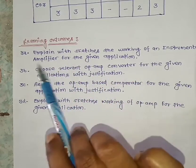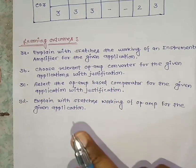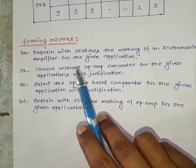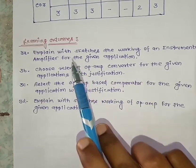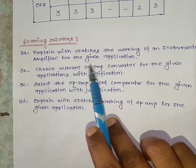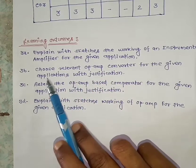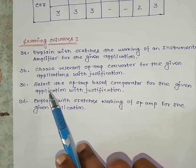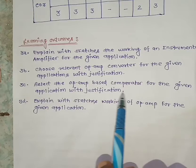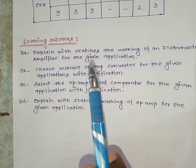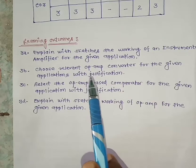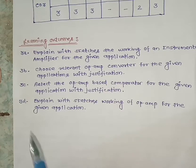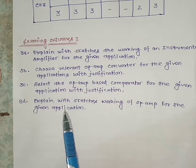The learning outcomes for this unit are: explain the working of an instrumentation amplifier for a given application; choose the relevant op-amp converter for a given application with justification; select the op-amp based comparator for a given application with justification; and explain the working of op-amp for a given application. These are the learning outcomes for this unit.